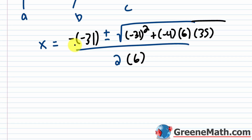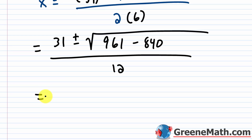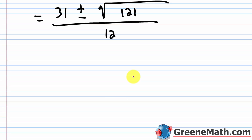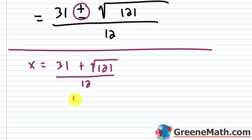Substituting: x = −(−31) ± √((−31)² − 4·6·35) / (2·6) = 31 ± √(961 − 840) / 12 = 31 ± √121 / 12. Since √121 = 11, this is (31 ± 11) / 12. Splitting into two cases: x = (31 + 11)/12 or x = (31 − 11)/12.